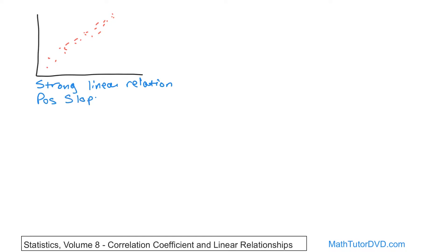Why is it positive? Because any line that goes up and to the right is by definition from algebra a positive slope, whereas negative lines go down to the right, like rolling down a hill. So we're splitting hairs a little bit — in the last section we were talking about linear relations being positive or negative, and now we're talking about whether it's strong or not.